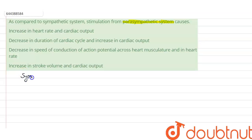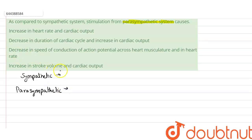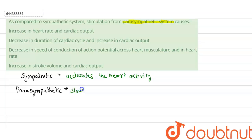Now, comparing sympathetic and parasympathetic systems: the sympathetic nervous system accelerates the heart activity, or we can say cardiac activity. On the other hand, the parasympathetic system slows down the cardiac activity.